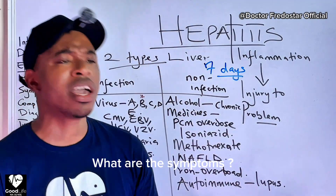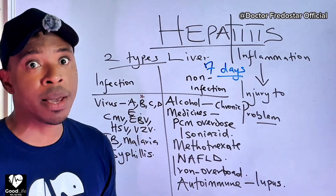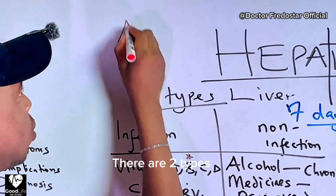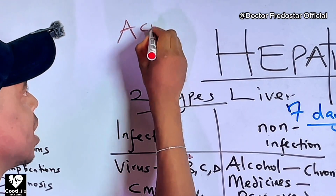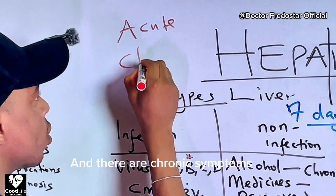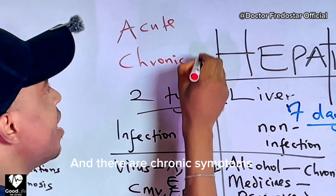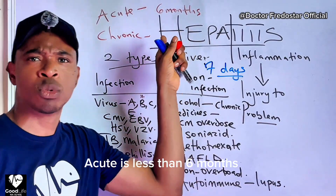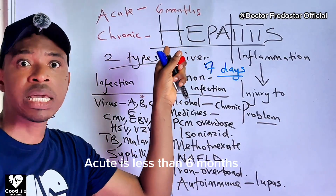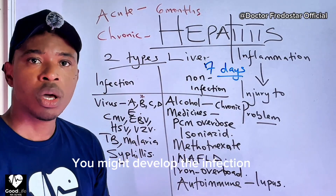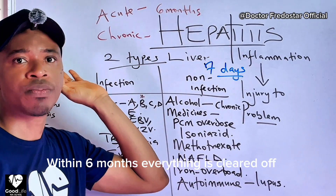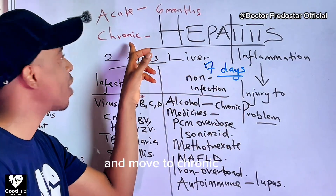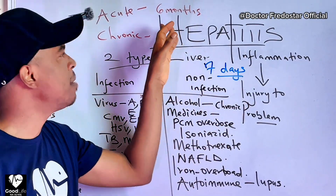Now what are the symptoms? You might not even know it's in your body. We have two types — what they call acute and what they call chronic. Acute means within six months — you get the infection and within six months everything will come out. But if it passes six months, it enters chronic.